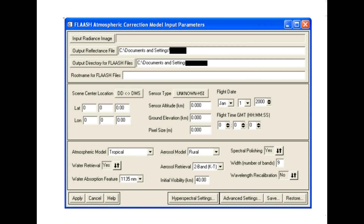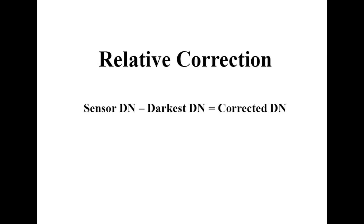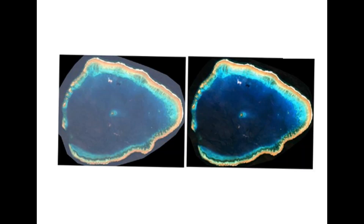This brings us to relative correction, which is essentially just the subtraction of dark pixel values. What we do is find the darkest feature and subtract it from the sensor for each band. The digital number again just means the pixel value from 0 to 256 — the color values. We do this to normalize intensities between images, usually the same area on different dates, to normalize intensities of color and reflectance.